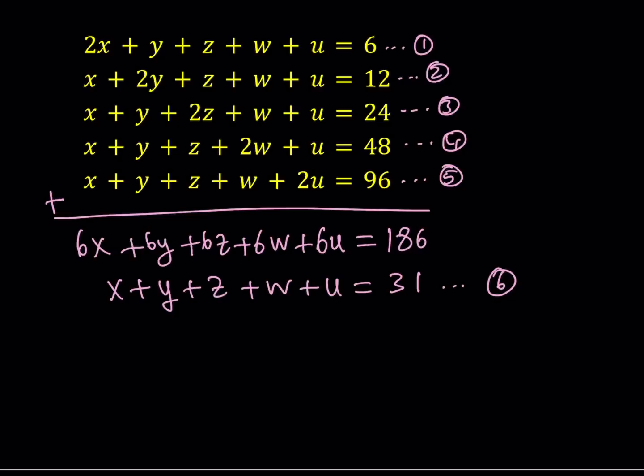So, if I subtract the sixth equation from the first one, subtract one minus six. What happens? Yes, that is correct. I get X. Why? Because I have 2X plus Y plus Z plus W plus U. And then from that, I'm subtracting X plus Y plus Z plus W plus U.